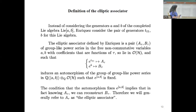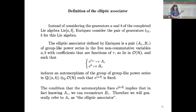Now I'll define the elliptic associator. It's a pair of two power series, both with coefficients being functions of tau, power series in A and B. You consider the group-like elements - power series starting with 1 that are group-like - as a group, and consider this as an automorphism of that group. Benjamin uses T_{0,1} and B as generators instead of A and B; you can get A back from those. The automorphism is determined by knowing its action on the first generator.